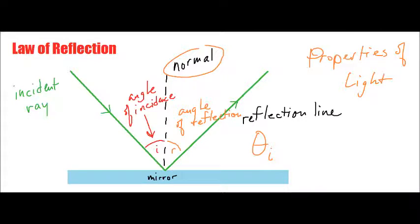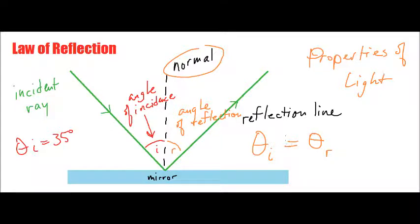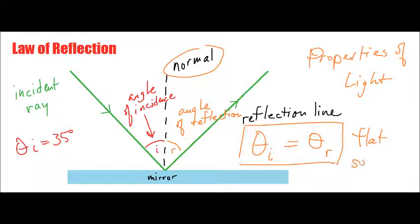So let's say theta I, the angle of incidence, is at 35 degrees — which means that the angle of reflection, theta R, is exactly equal to 35 degrees. When light reflects off a surface, the angle of incidence is always equal to the angle of reflection. That is the law of reflection, and it's an important property of light when dealing with flat surface reflection and mirrors particularly.